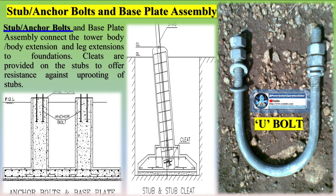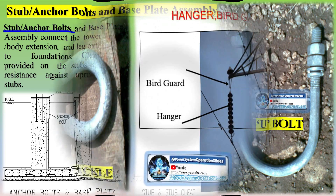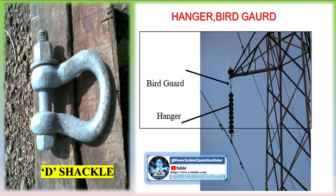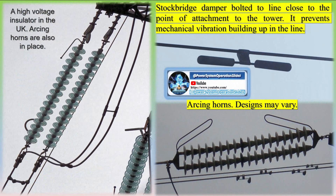Depending upon the requirements of the transmission system, various line configurations must be considered, ranging from single-circuit horizontal to multi-circuit vertical structures, with single or V-strings in all phases, as well as any combination of these. For very high voltages of 500 kV and above, conductors are bundled to reduce corona emission and reduce line inductance.